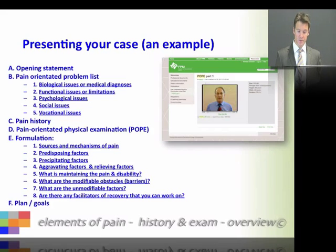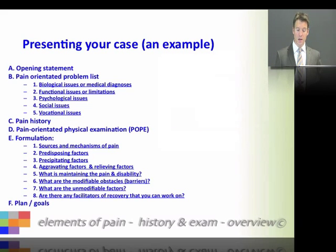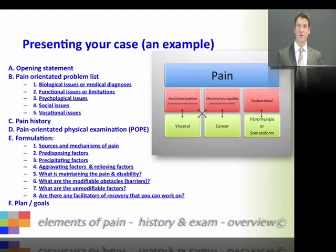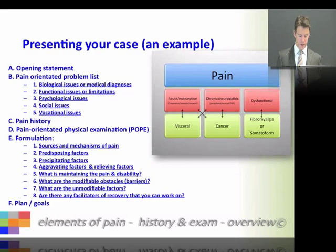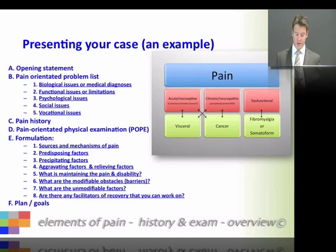Moving on to the formulation — this is where you can shine and show that you understand the patient and what's going on. You can approach your formulation under a number of headings. You might describe the sources and mechanisms of pain. For example: this patient had failed back surgery syndrome, discogenic joint disease, and a tender left sacroiliac joint, so there may have been a mixed nociceptive and neuropathic component of pain.